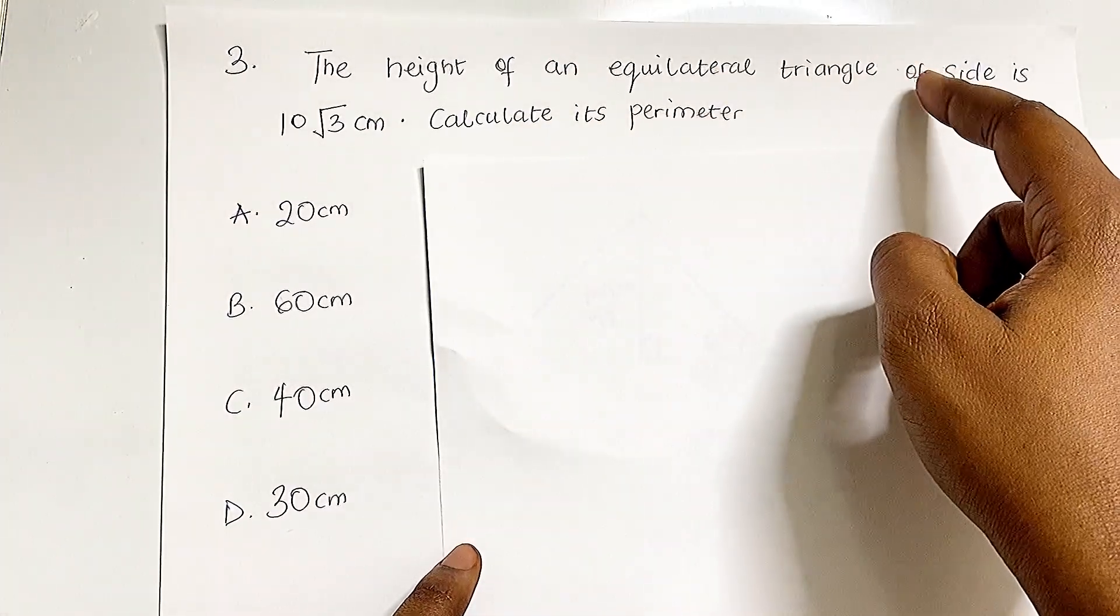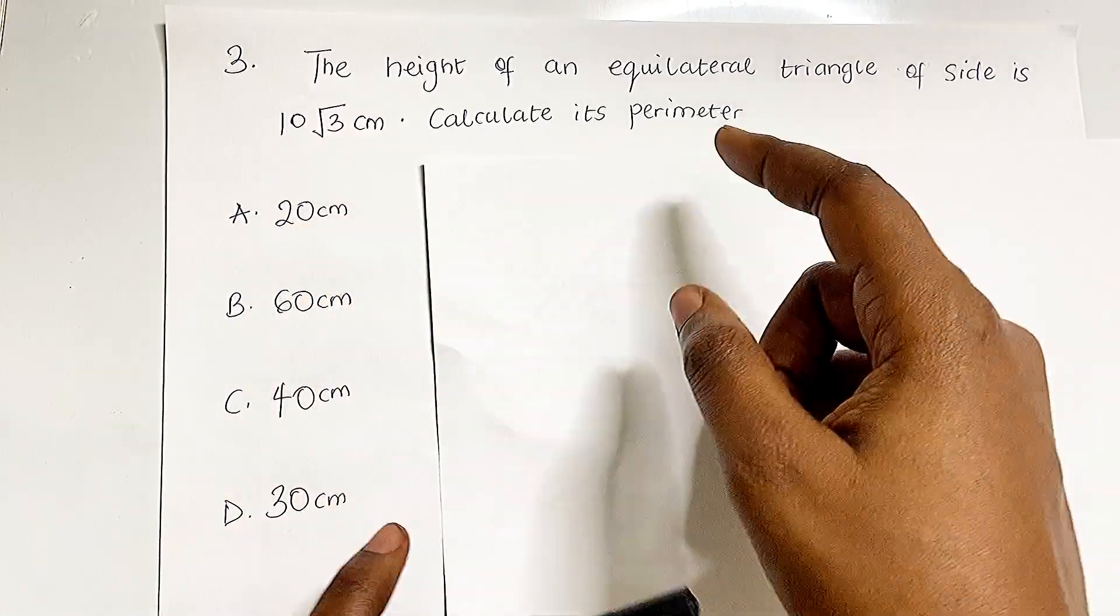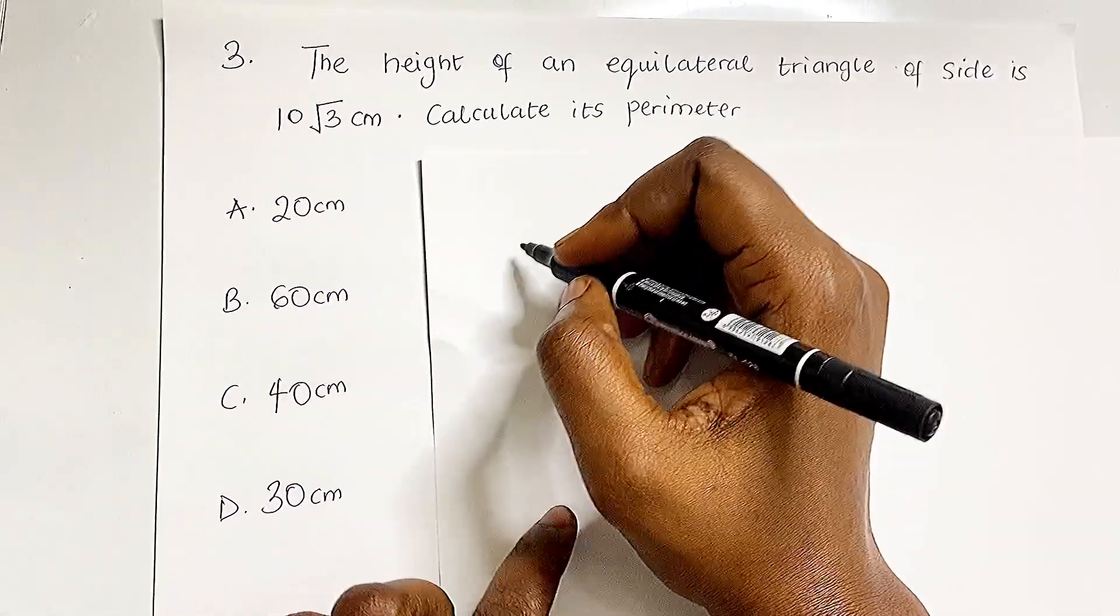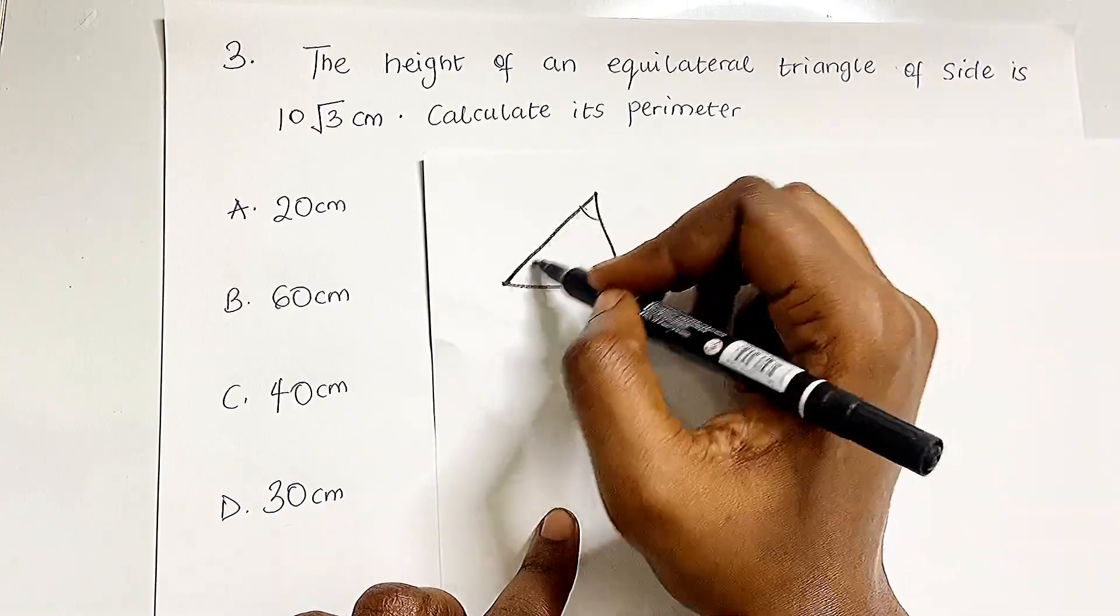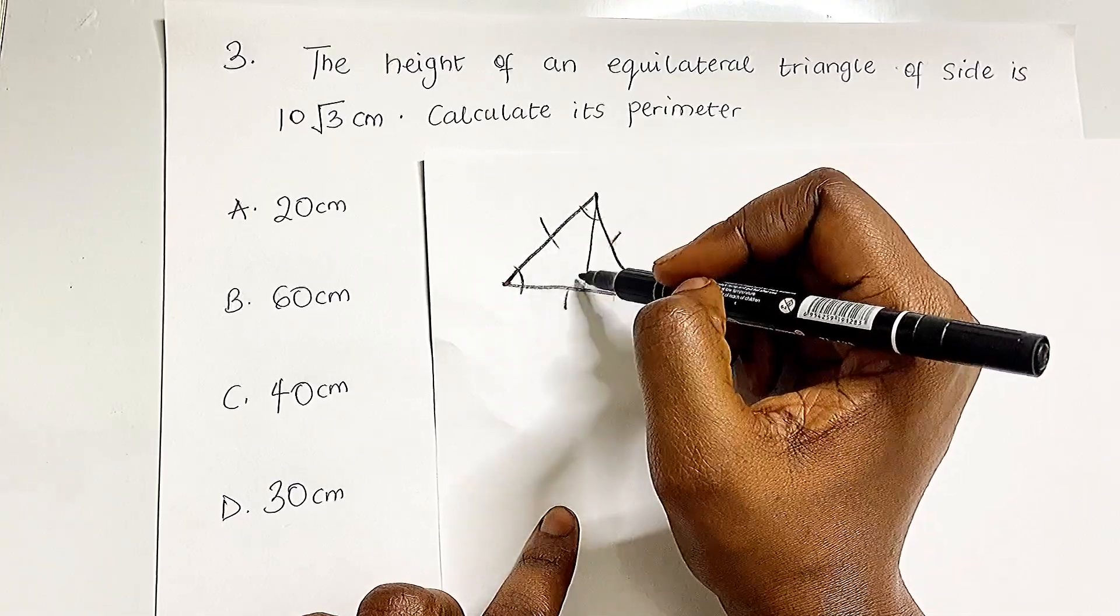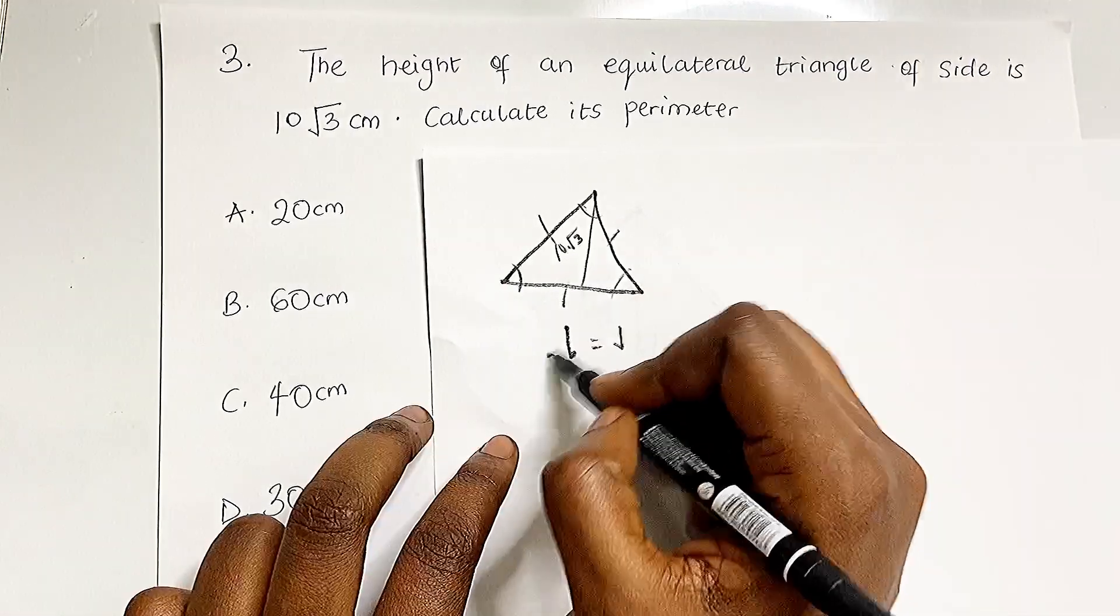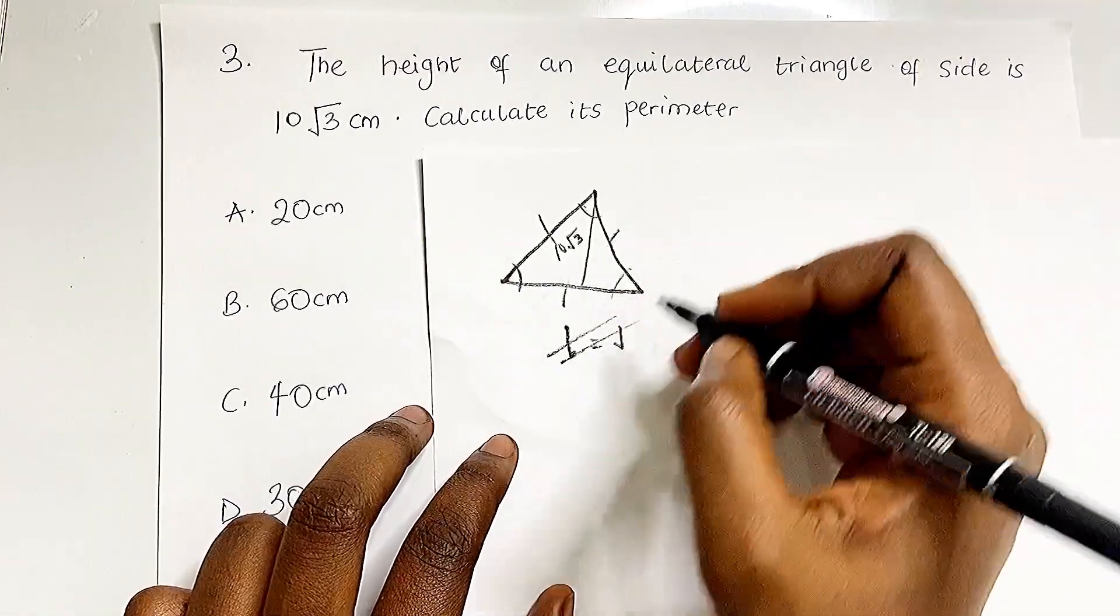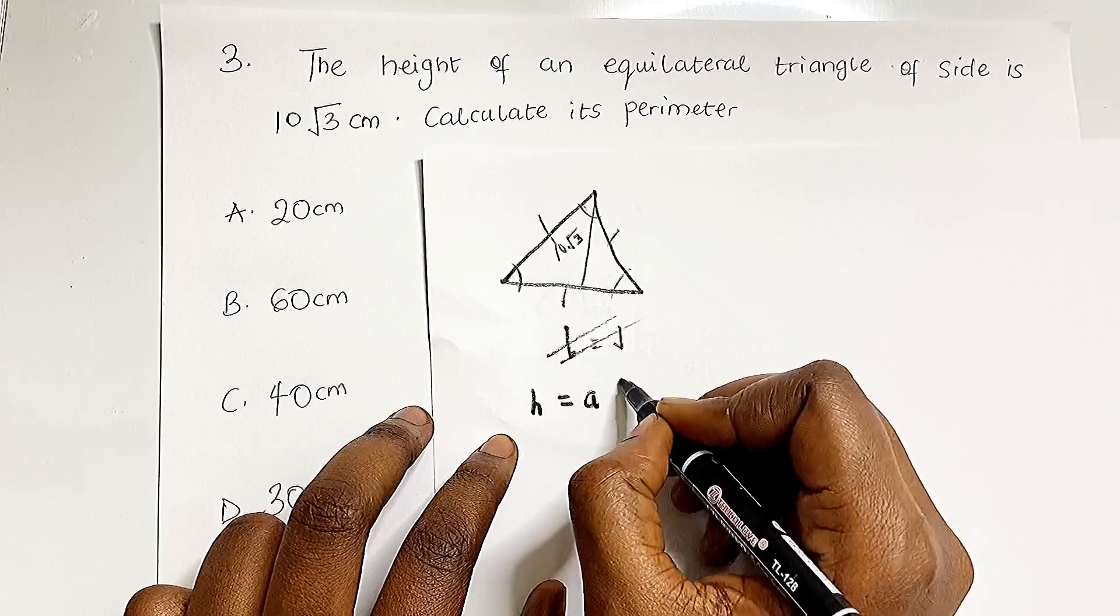Question 3: The height of an equilateral triangle is 10√3. Calculate the perimeter. An equilateral triangle has equal angles and equal sides. The formula relating height and side length is H = (A√3)/2.